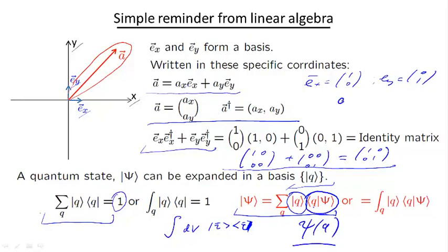This is much like coordinates. For instance, Aₓ can be written as Eₓ† times A. And here, Ψ(Q) can be written as a bracket product of Q and Ψ.